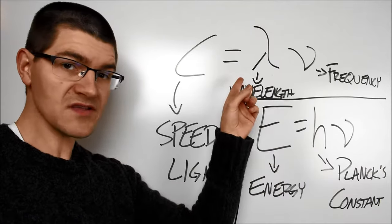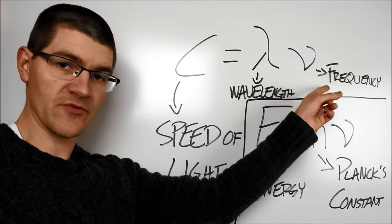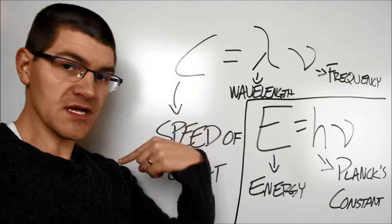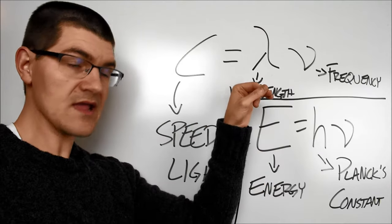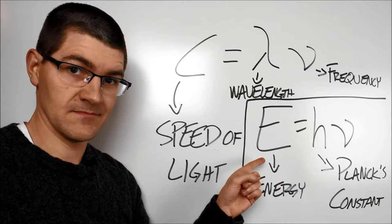Coupling it with our previous equation, we can see that a higher wavelength light wave has a lower frequency, and therefore has a lower energy. By the converse, a lower wavelength wave has a higher frequency, which has a higher energy. Make sense? Great!